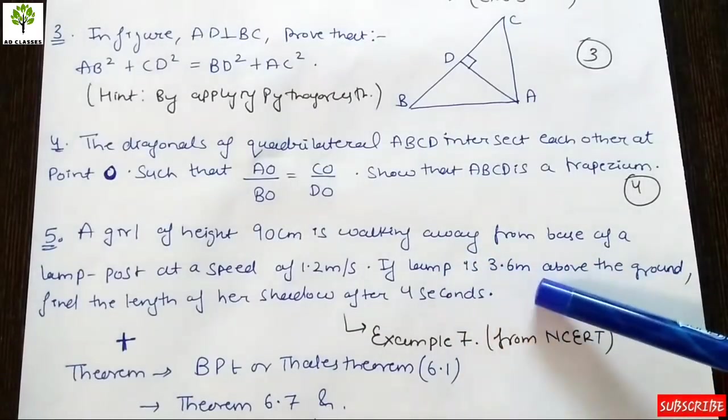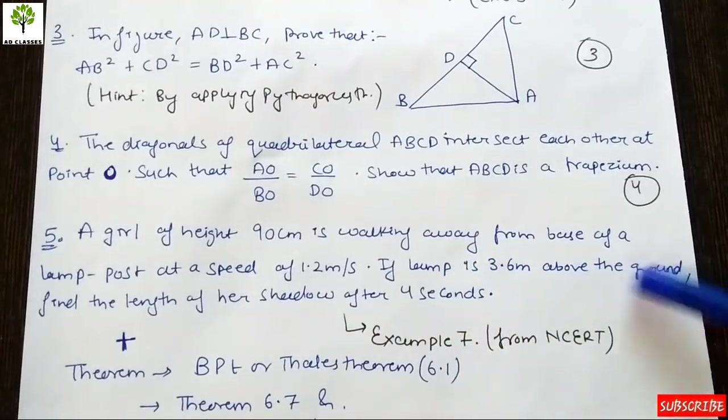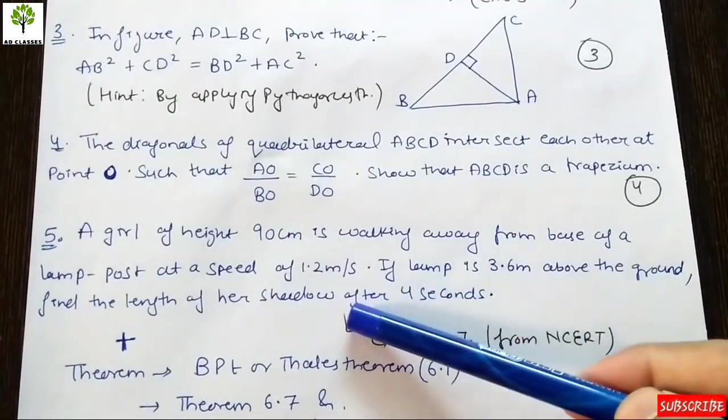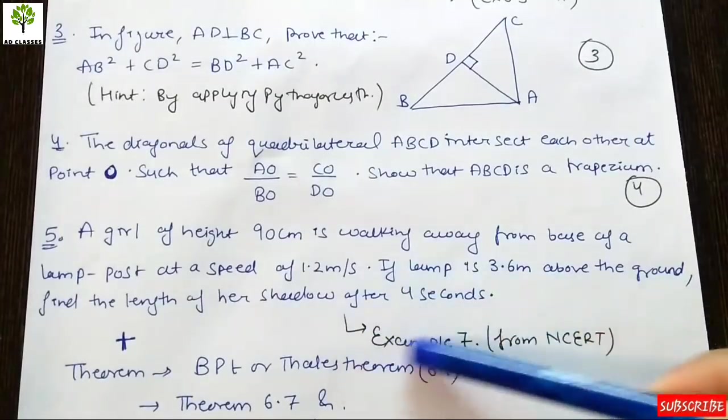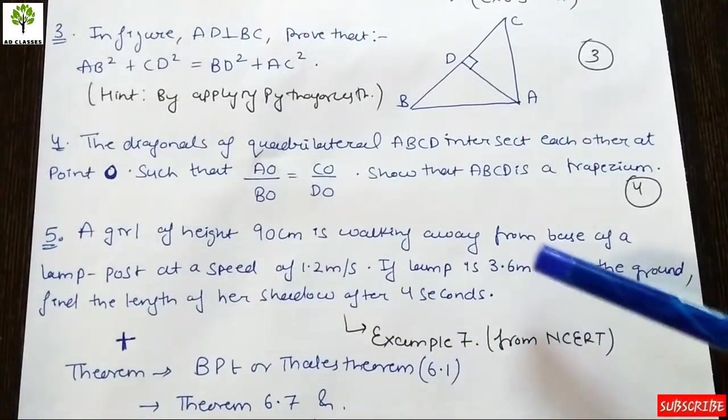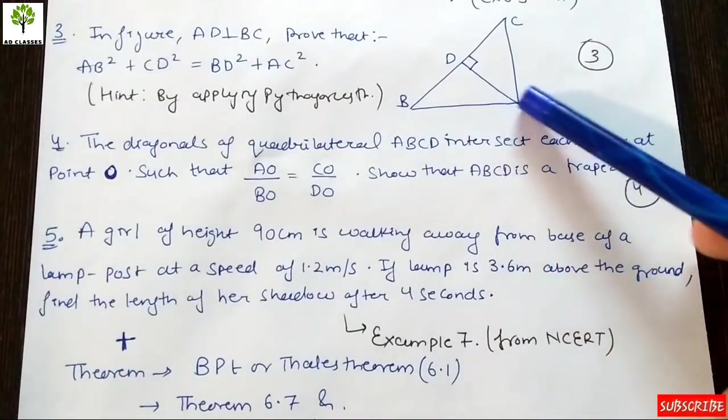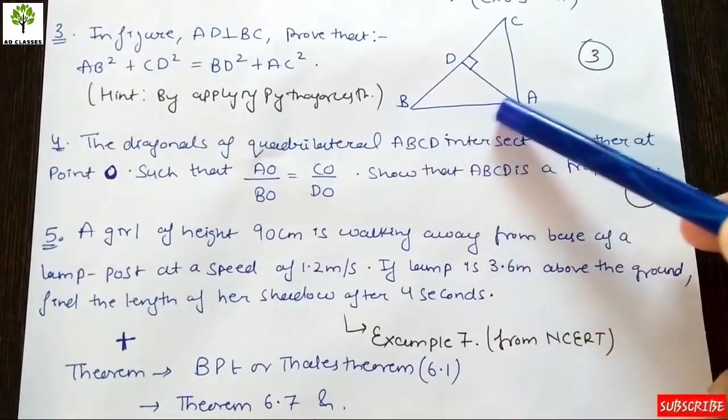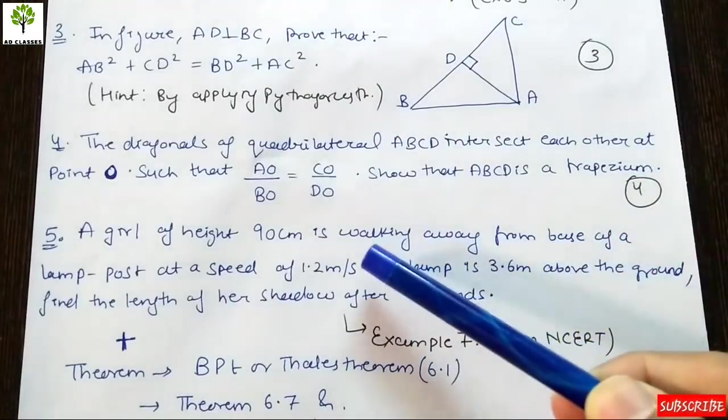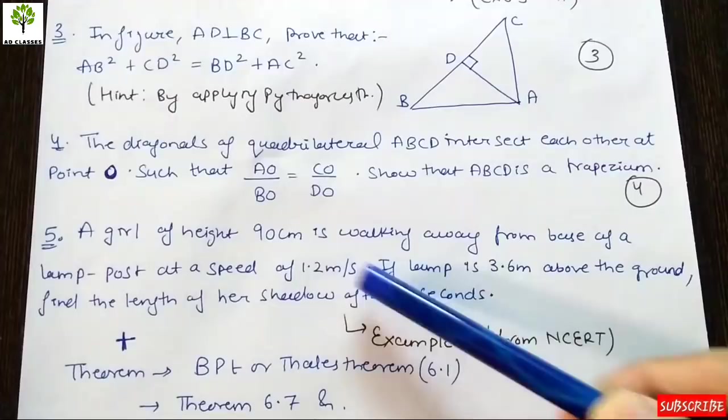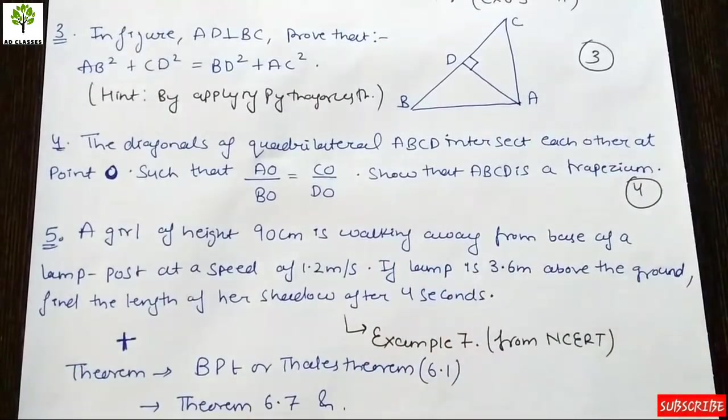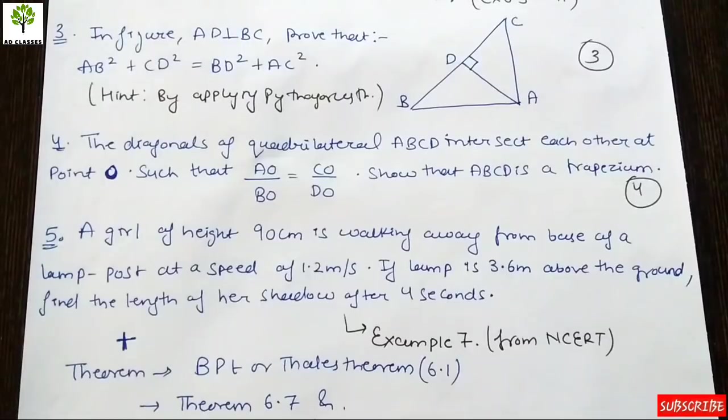This is Example 7 from the NCERT book. If the speed of the girl is given and time is 4 seconds, distance equals speed into time. Speed is already given, time is given, units don't need to be changed because it's meters per second. We can easily solve this problem.